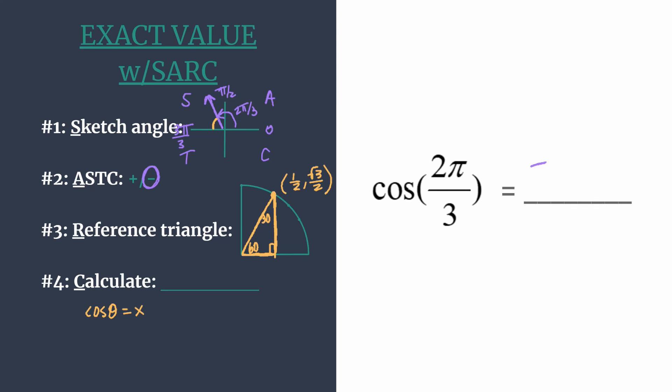Simply look at the x-coordinate. It's 1/2. We already decided that our answer should be negative in step 2, so the cosine of 2π/3 must be negative 1/2.